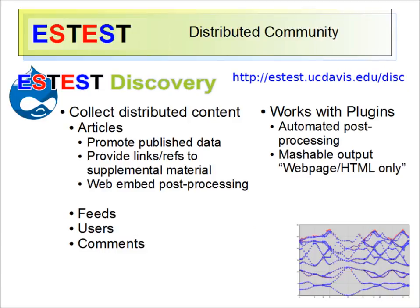So what about community? If everything is distributed around the network, how are we going to communicate interesting work using ES test? One effort well underway at UC Davis is the ES test discovery portal. Discovery is a Drupal-powered website aimed at collecting users and comments about work being done with ES test. This work is presented as HTML articles published to the front page and indexed for searching. These articles are like informal publications in which to discuss the story of a simulation result and support it using supplemental links to an ES test server, as well as embedding tables and plots generated by ES test plugins. The output of plugins are often self-contained HTML webpages that can be captured by right-clicking save as web page, and these pages are mashable as iframes or even screenshots.